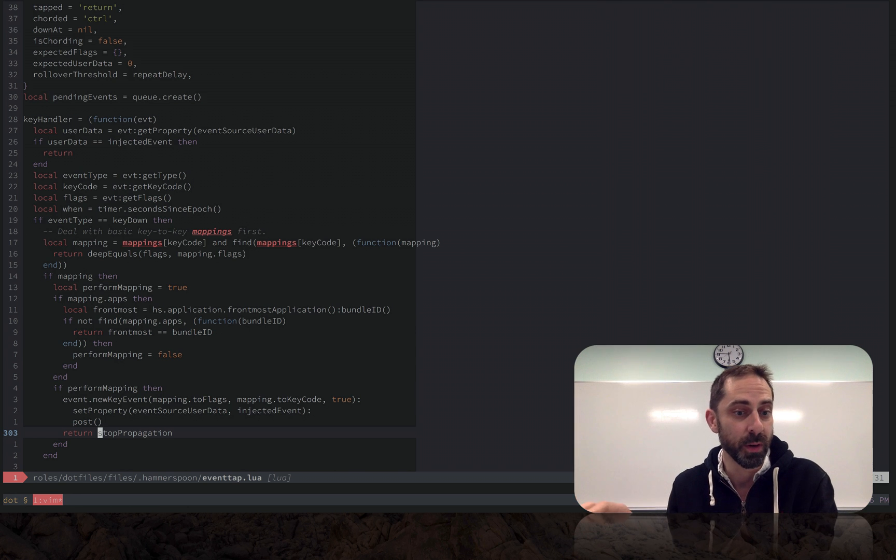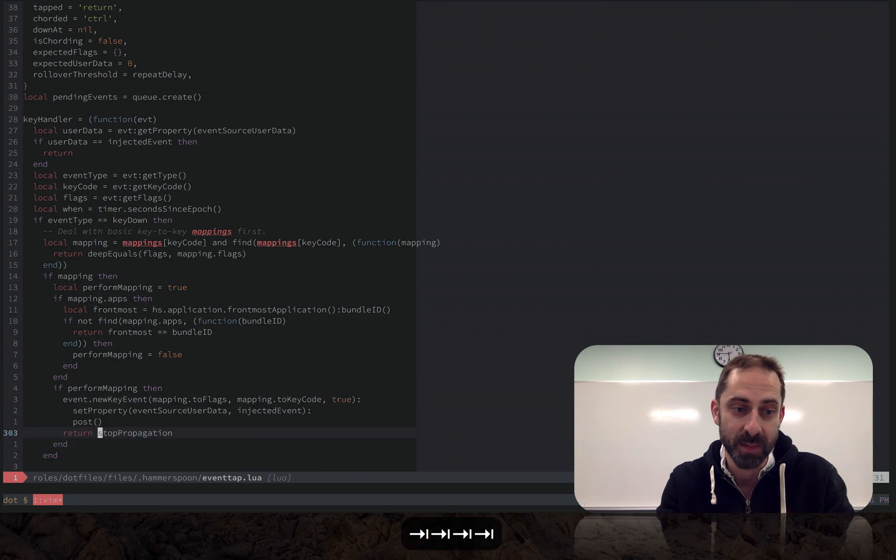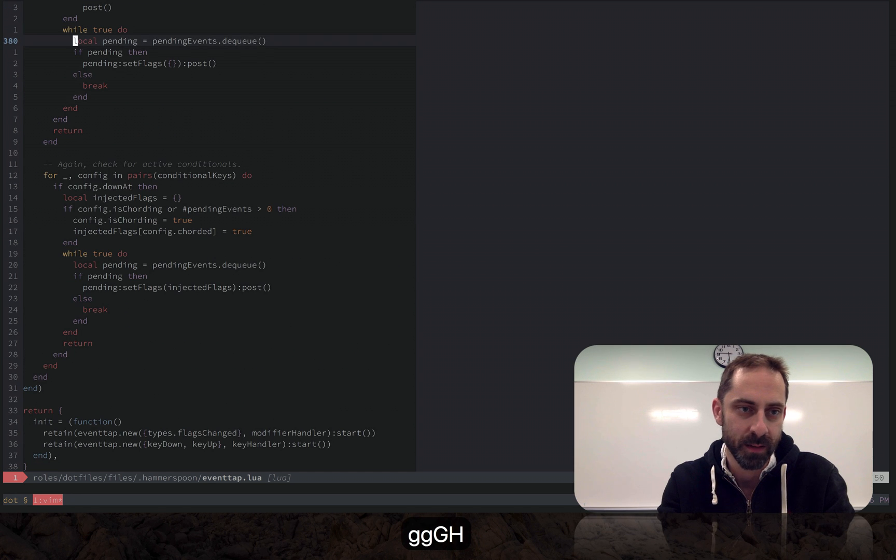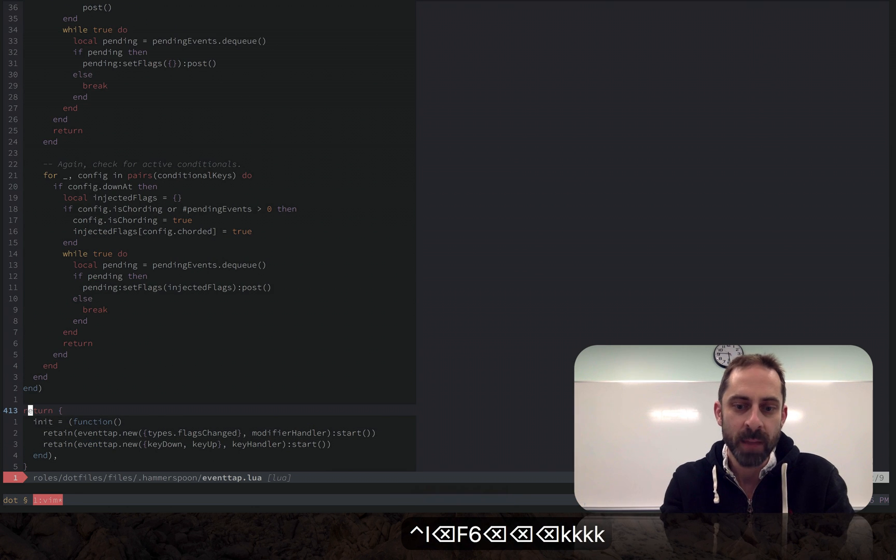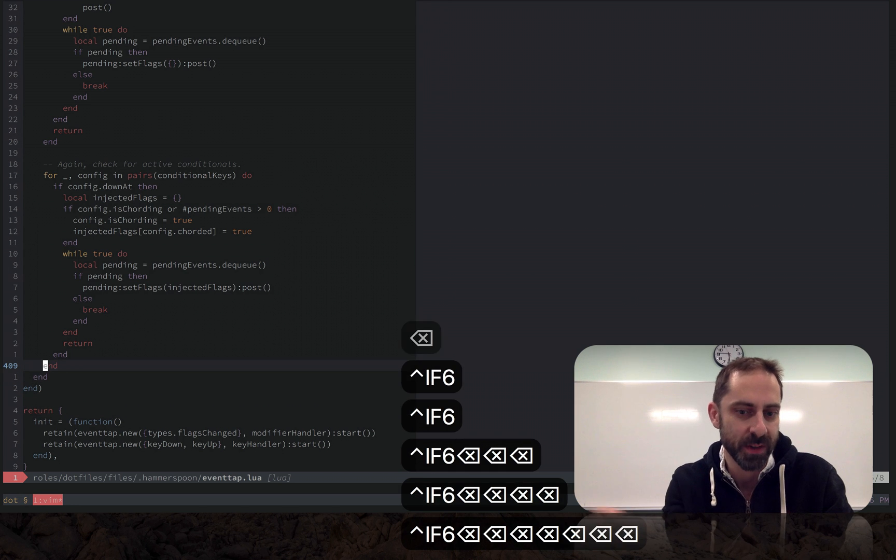You can see that that works because I'm hitting tab and getting through. Similarly if I jump around this file a bit, both control I and control O still work. You'll notice there with the display of what keys I'm hitting, when I hit control I it's actually sending F6.